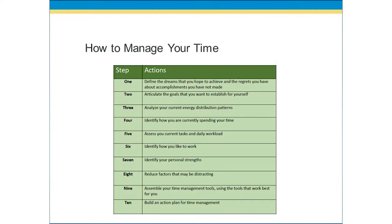Knowing how you like to work helps you identify what your personal strengths are. In step eight, you will reduce factors that may be distracting — all of those items that might be preventing you from utilizing and distributing your energy appropriately and getting things accomplished. From there, we'll move into step nine, where you can assemble your time management tools — tools that we'll talk about shortly — using those tools that will work best for you in the ways that you like to work. And finally, step ten is to build an action plan for time management, looking at how you currently spend your time, what your current tasks and workload are, understanding how you like to work and your personal strengths, and then putting a plan together to eliminate distractions and put the tools into practice so that you can manage your time in the most effective manner.